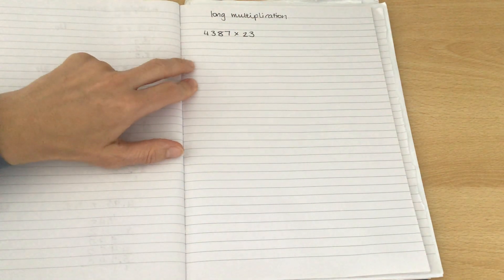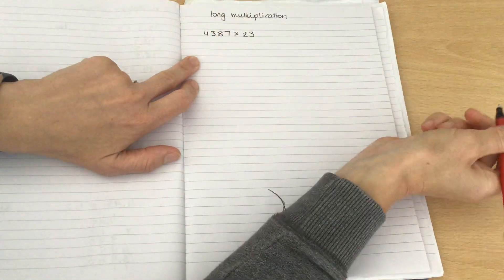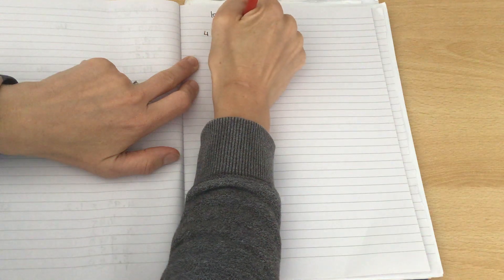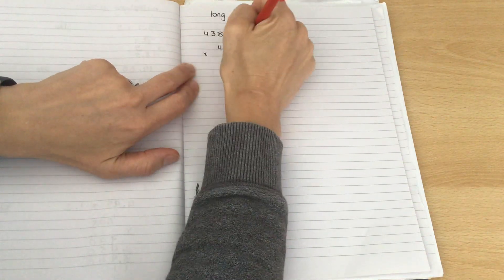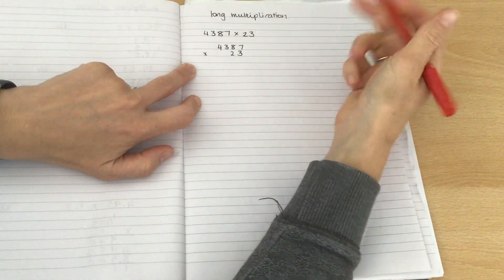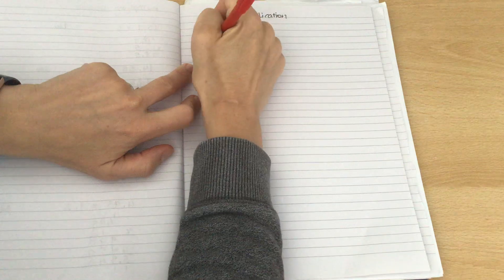So, let's start off with an example of 4,387 times 23. The first thing I need to do is set it out in a column. 4,387 times 23. And I'm lining it up using my place value, just checking that I've copied everything down correctly.